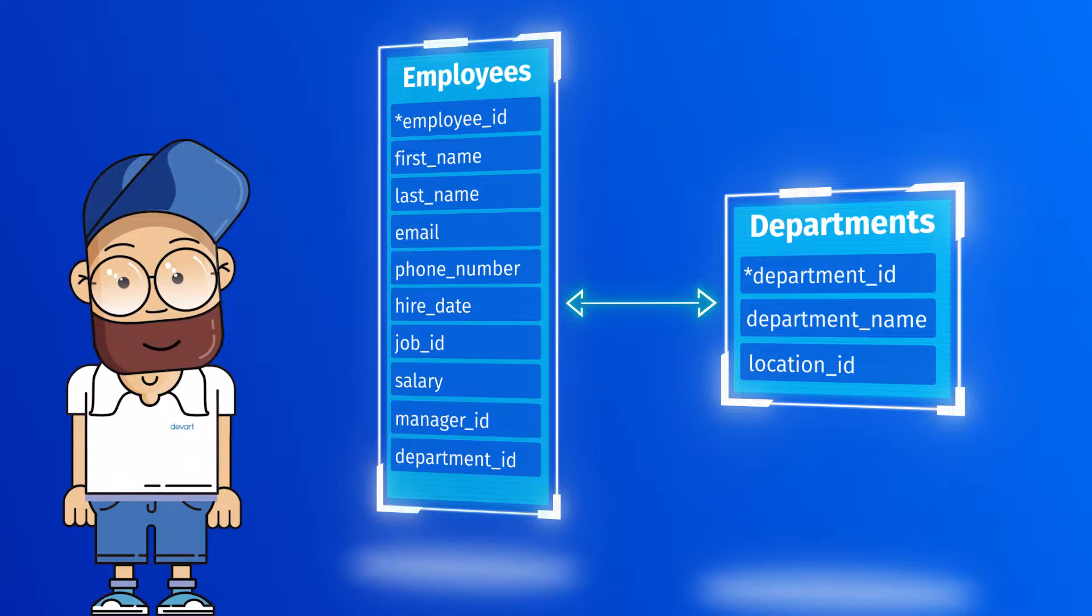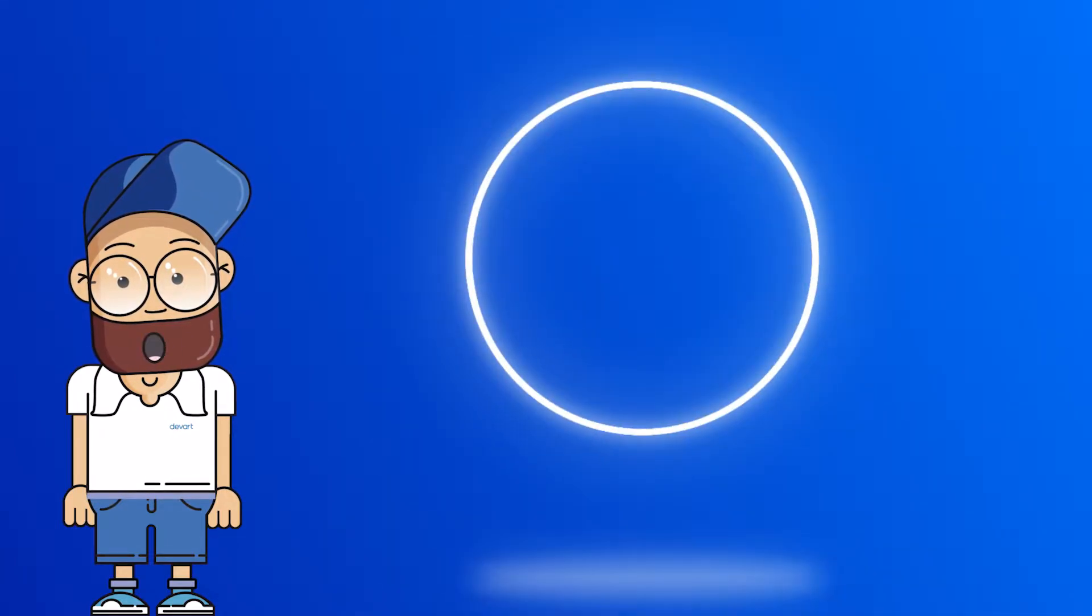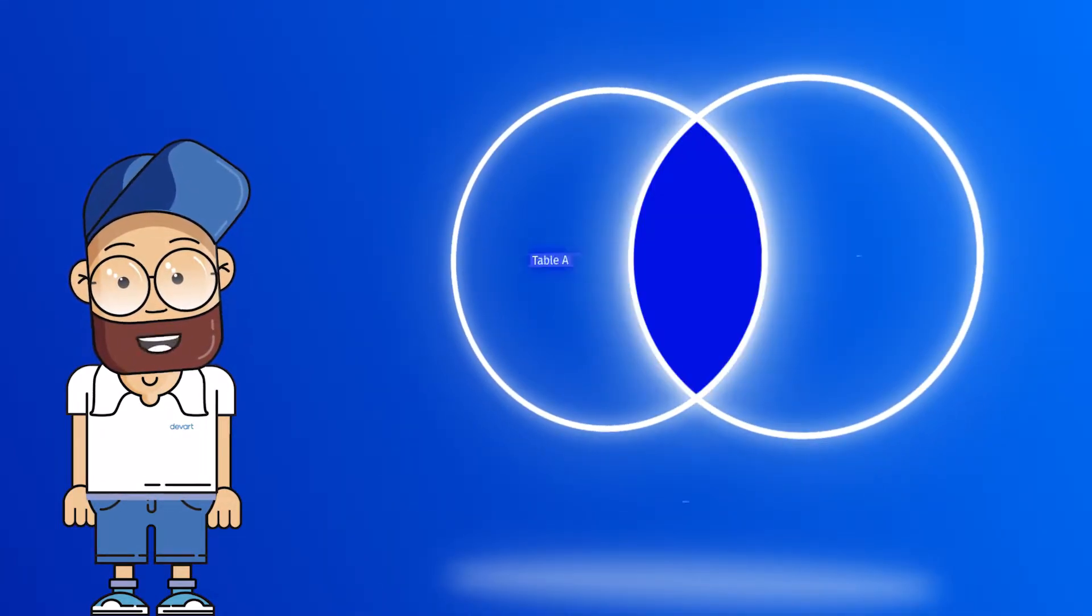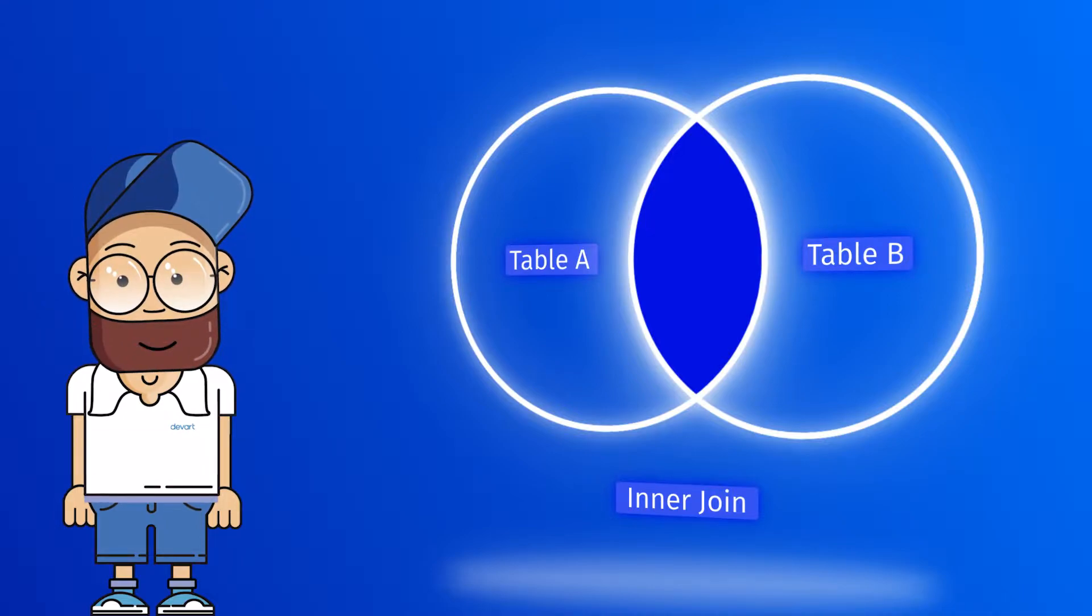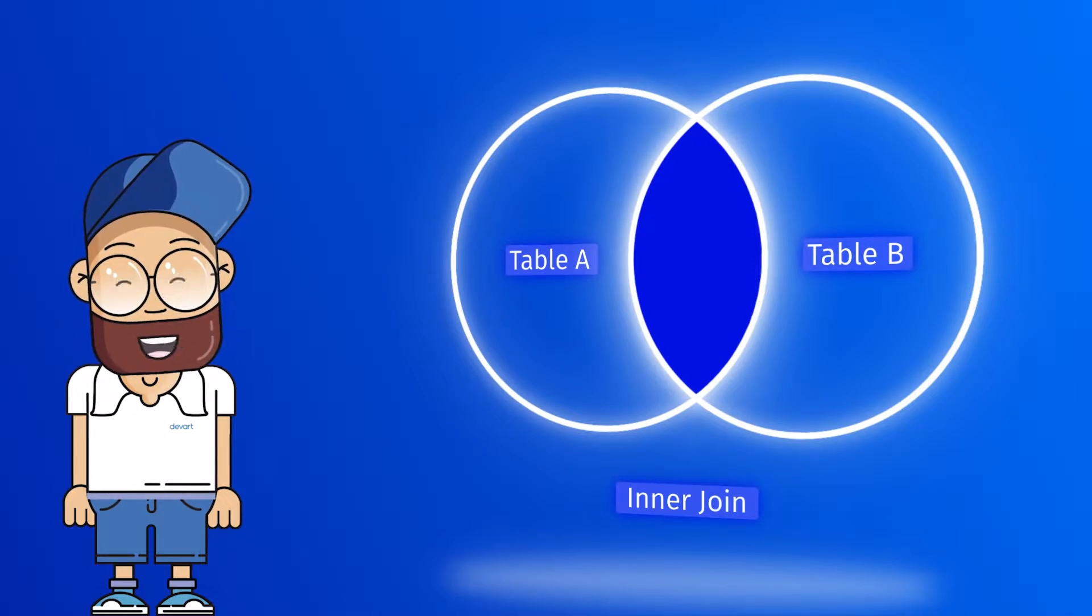Let's start our walkthrough with the inner join. Use the inner join when you need to retrieve data from two or more related tables. Inner joins return only those records or rows that have matching values, and are used to retrieve data that exists in both tables.